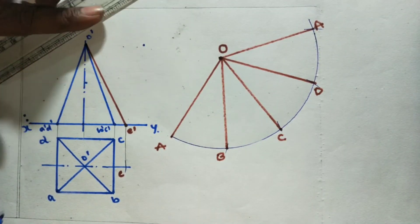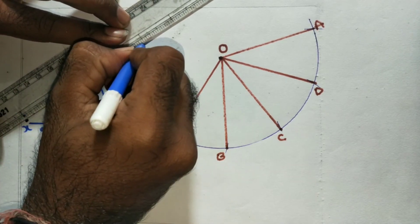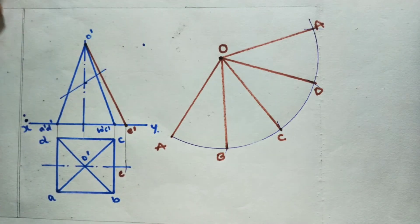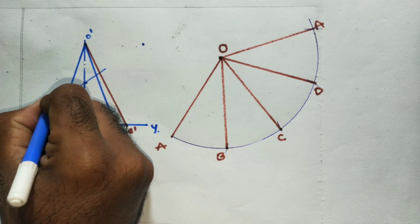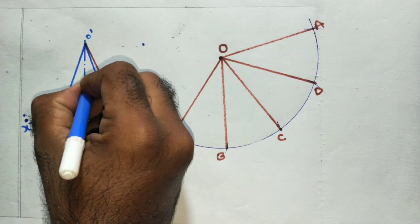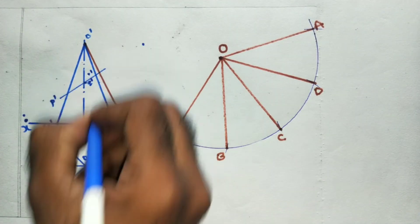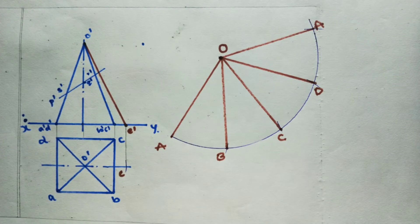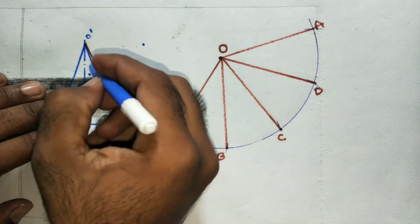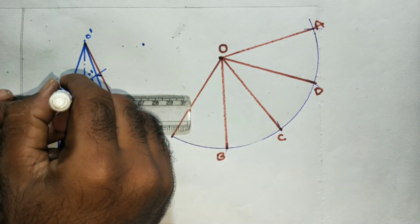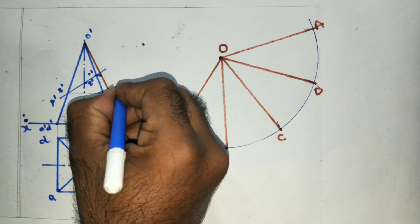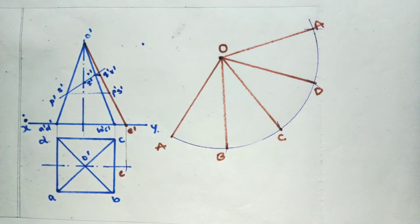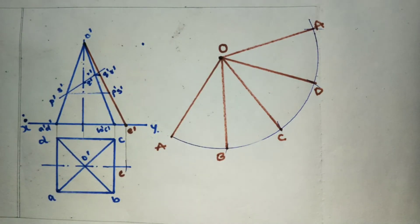Now this gives us points E2. Mark P', small P', P dash, Q dash, R', S'. Now we will find the true edge line. We will do the extension here and draw the true edge line.